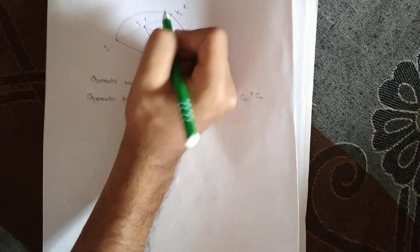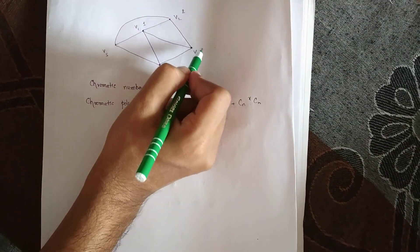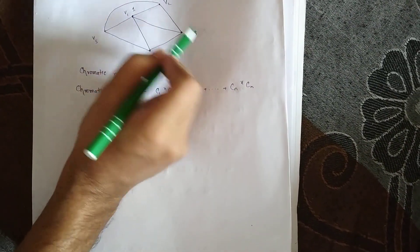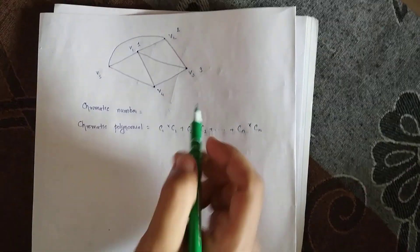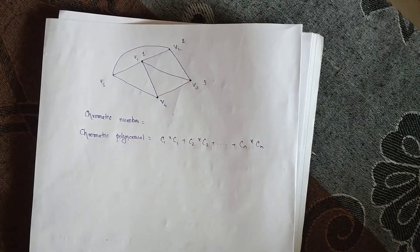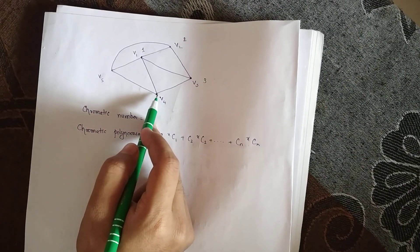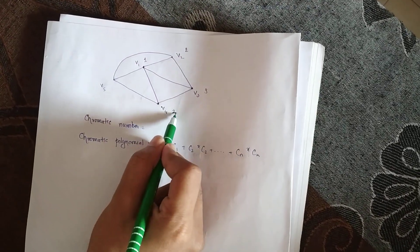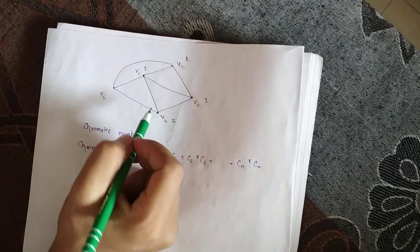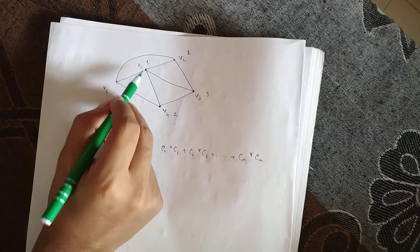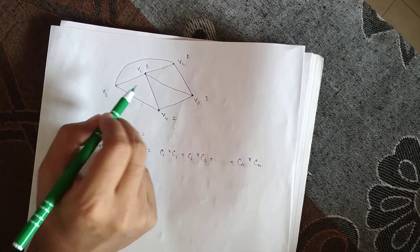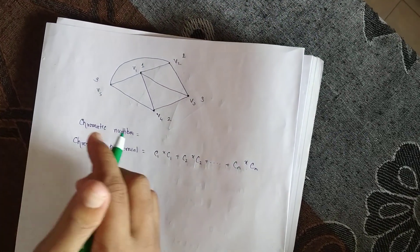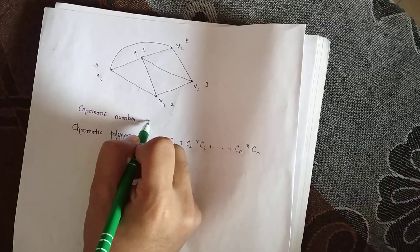Again, v3 can be colored with color 3 because it is adjacent to both v1 and v2. Now v4 is adjacent to v3 and v1, so we can give it color 2. v5 is adjacent to v1 and v4, which have colors 1 and 2, so we give it color 3. Therefore the chromatic number is 3.